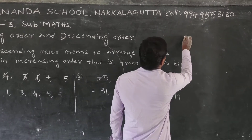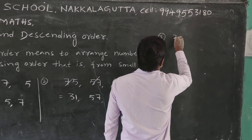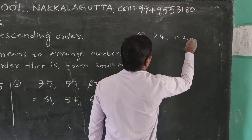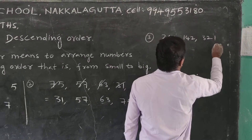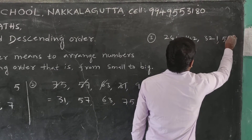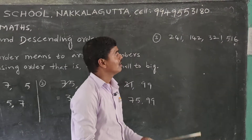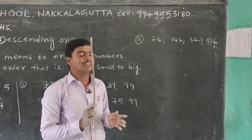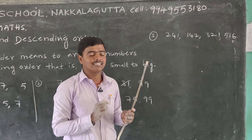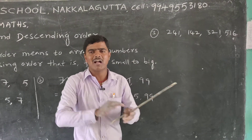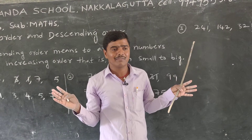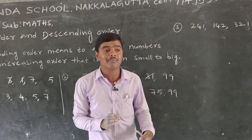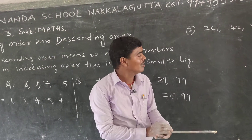Third example — all three-digit numbers: 241, 142, 321, and 560. Arrange these in ascending order. What is ascending order? Small to big, or increasing order — increasing order means small to big.